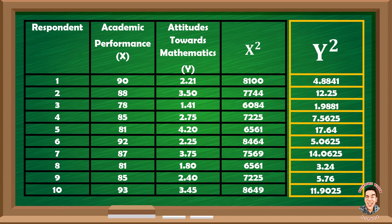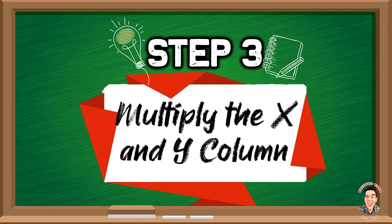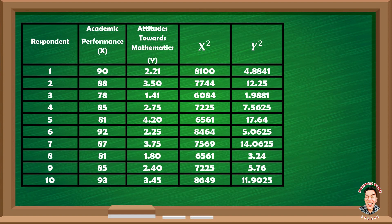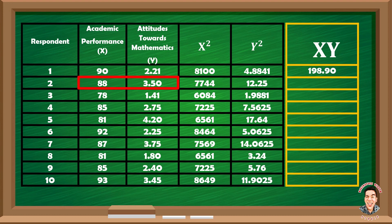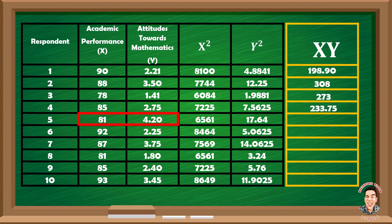Step 3: Multiply the x and y columns. Multiplying the x column (academic performance) by the y column (attitudes towards mathematics), we have: 90 times 2.21 equals 198.90; 88 times 3.50 equals 308; 78 times 1.41 equals 273; 85 times 2.75 equals 233.75; 81 times 4.20 equals 340.20; and 92 times 2.25 equals 207.